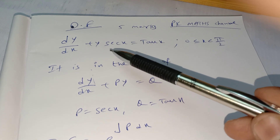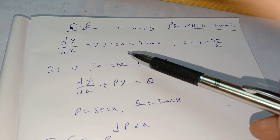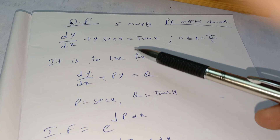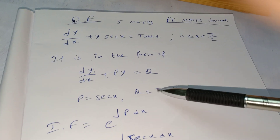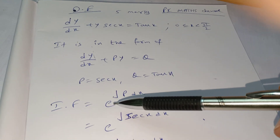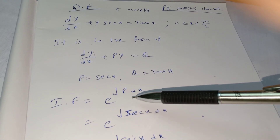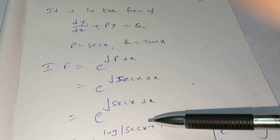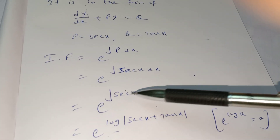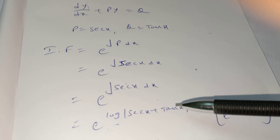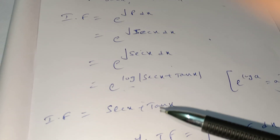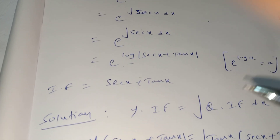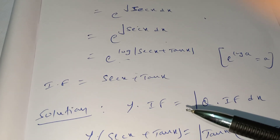To recap: the given equation dy/dx + y·sec(x) = tan(x) is in the form dy/dx + Py = Q, with P = sec(x) and Q = tan(x). The integrating factor is e^(∫sec(x) dx). Since ∫sec(x) dx = log|sec(x) + tan(x)|, after cancellation, IF = sec(x) + tan(x).